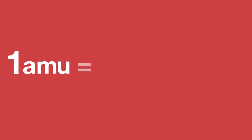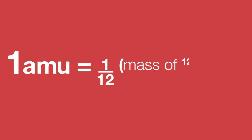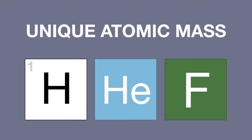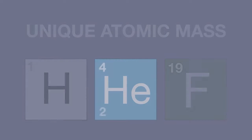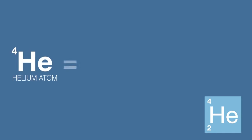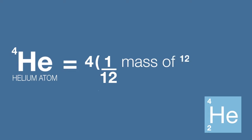Therefore, one atomic mass unit, or AMU, is quite simply one twelfth of the mass of a carbon-12 atom. Every atom has its own unique atomic mass based on this relative scale. Our earlier example of helium had an atomic mass of four. In full, this means that the helium atom has a mass of four times one twelfth of the mass of a carbon-12 atom.